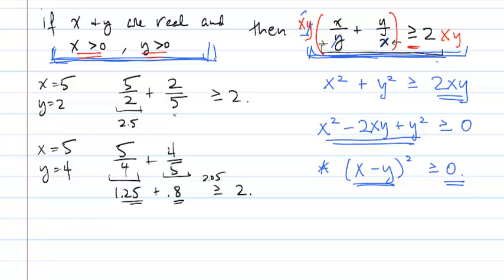So in the scratch work, we started with what we were trying to prove, and we sort of worked backwards to get to this x minus y squared. But the proof being a direct proof is going to go forward and end up at the inequality that we're trying to prove.